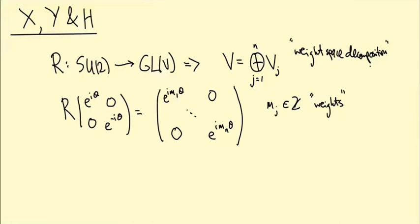So this is called the weight space decomposition of our representation. This is not a decomposition of the representation into sub-representations for SU(2), but it is a decomposition of the action of this subgroup isomorphic to U(1).